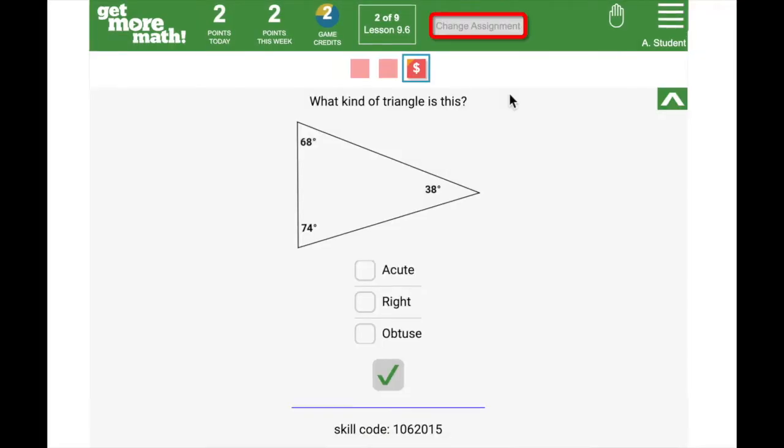If the change assignment button is gray and you can't click on it, that might mean that you've completed all of your assignments or it could mean that your teacher has turned off the option to switch between assignments and mixed review.